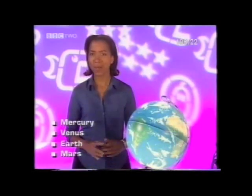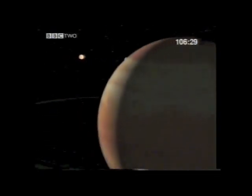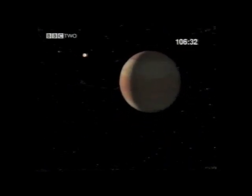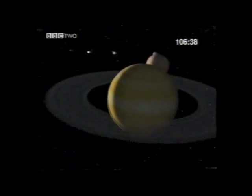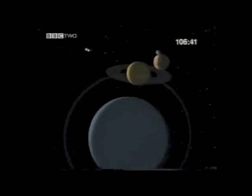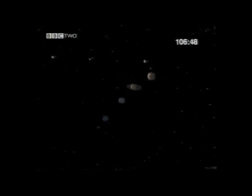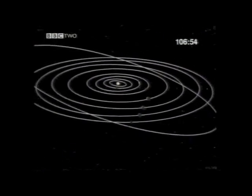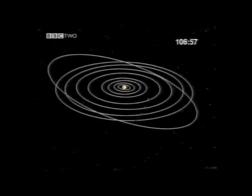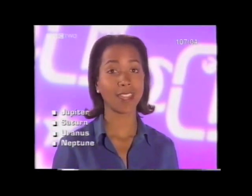That takes us up to four inner planets. The outer planets start with Jupiter, orbiting 780 million kilometres away from the Sun, then Saturn at double that distance, then Uranus, then Neptune, and finally Pluto with its strange orbit. All of these outer planets are thought to be very similar, but they're so far away they're very difficult to see with ground-based telescopes.